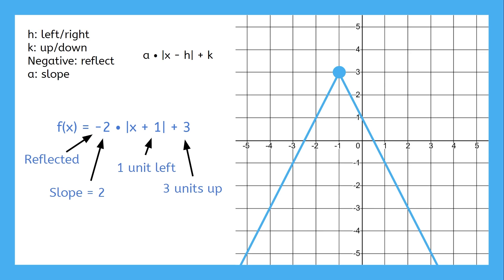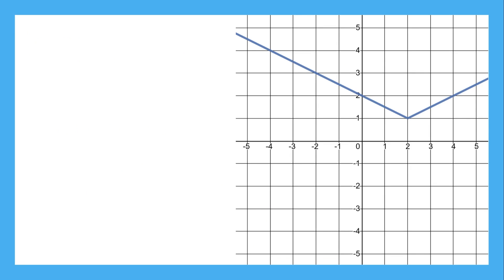This graph matches the function negative 2 times the absolute value of x plus 1 plus 3. You can plug in any input for x and get the same output as in the graph. Finding the function for an absolute value graph is even easier. Just find all the pieces and then plug them in.